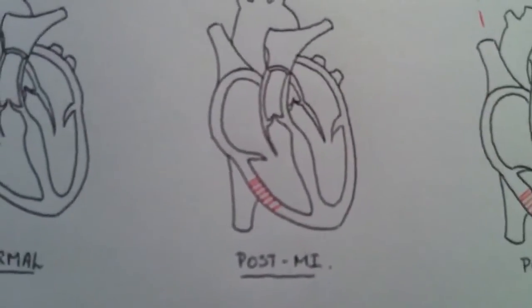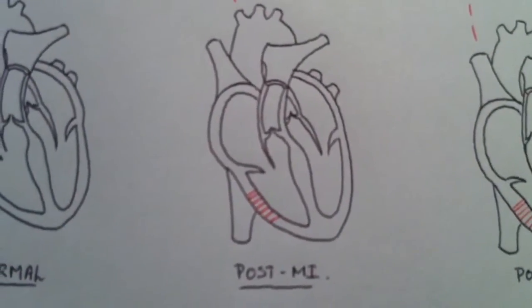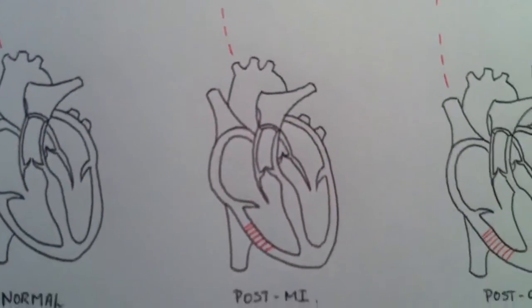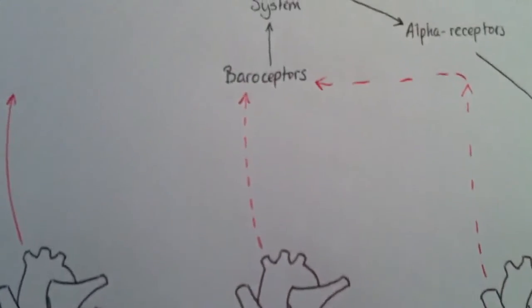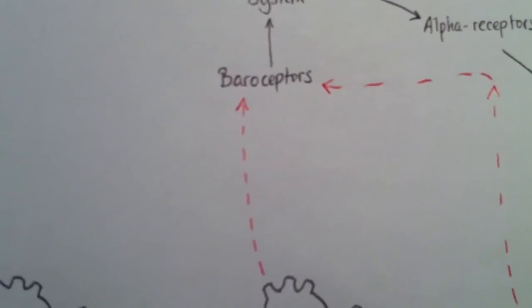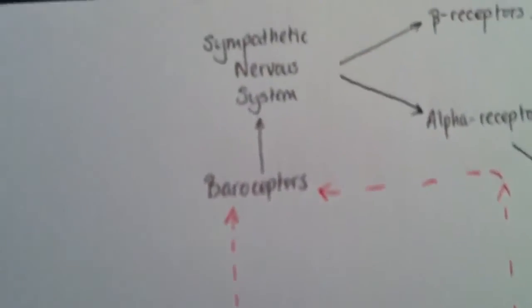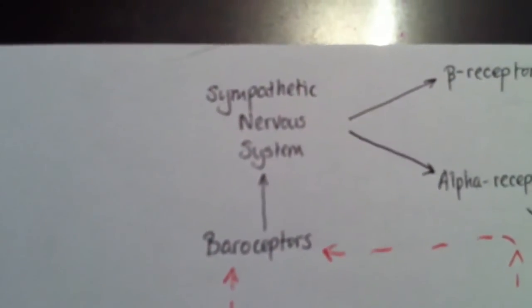you get some damaged cells. So the red lines there show that's damaged cells. So this is post-MI or post-heart attack. And then you get a reduced cardiac output,